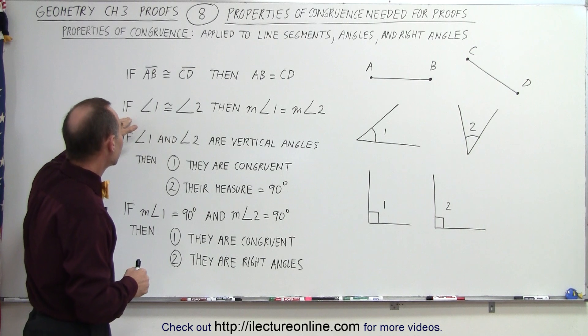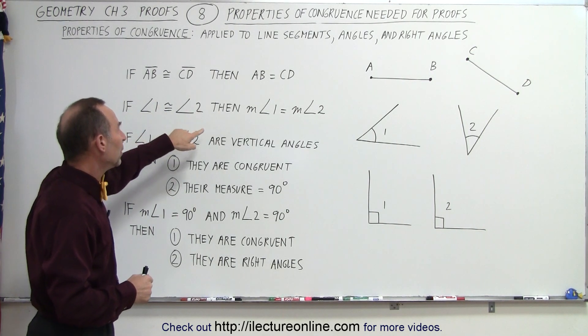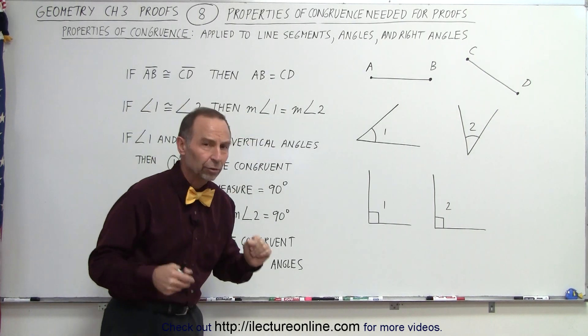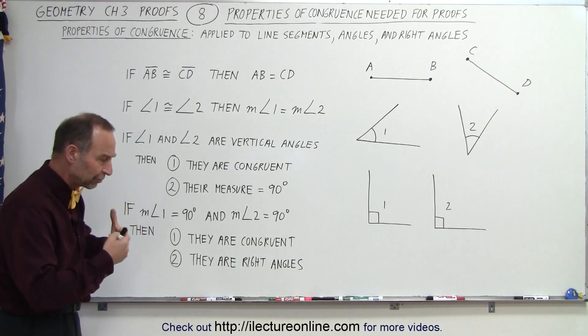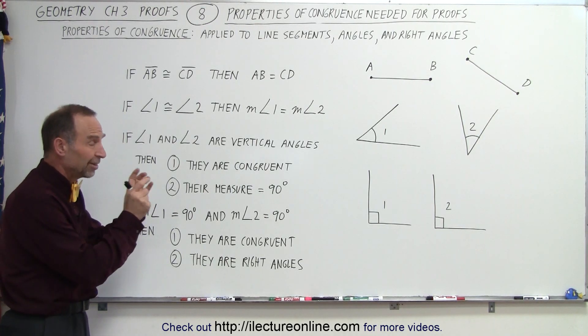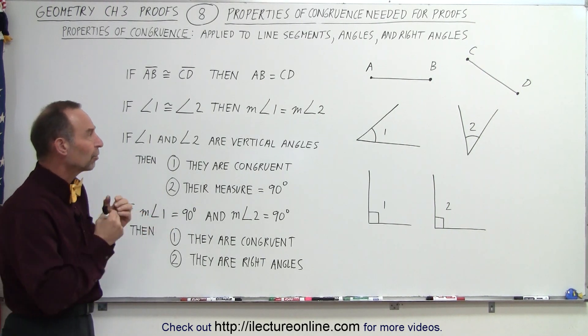If angle 1 is congruent to angle 2, then the measure of angle 1 equals the measure of angle 2. That's the beauty of congruence: if segments are congruent, they're the same length; if angles are congruent, their measures are equal.